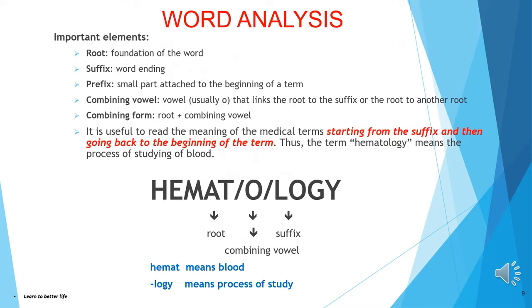Important elements: root — foundation of the word; suffix — word ending; prefix — small part attached to the beginning of a term; combining vowel — a vowel, usually O, that links the root to the suffix or the root to another root; and combining form — root plus combining vowel.